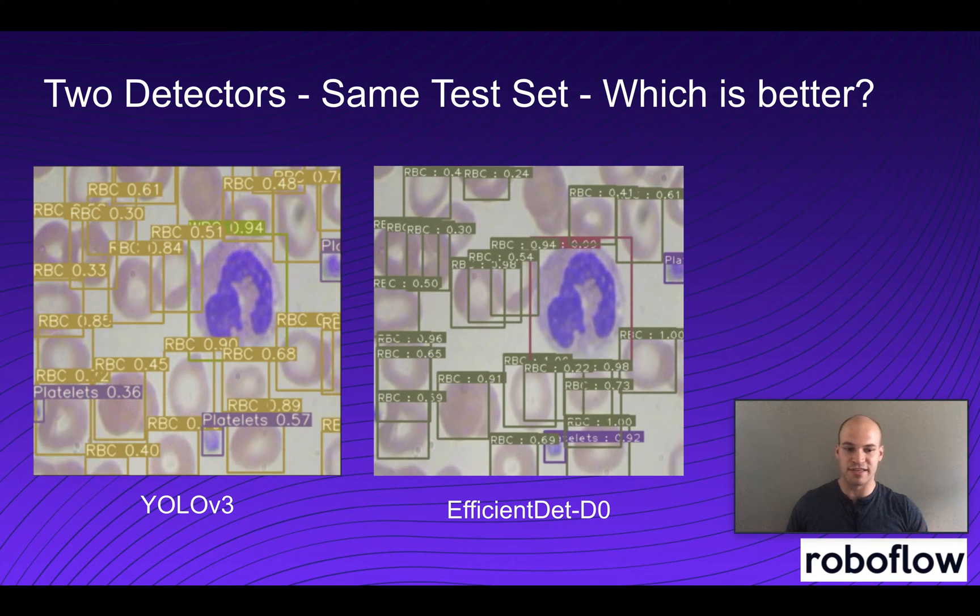And so here we can see some example predictions. We see here that YOLO v3 is doing a very nice job of identifying red blood cells and it has a white blood cell here and platelets. It seems like it's doing a good job, as is EfficientDet.